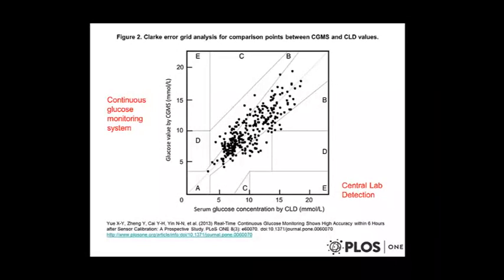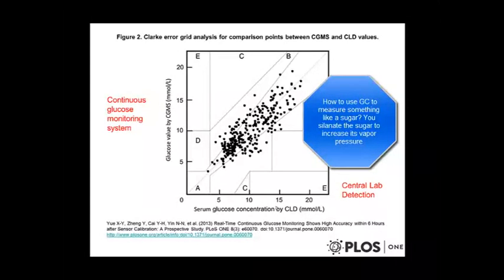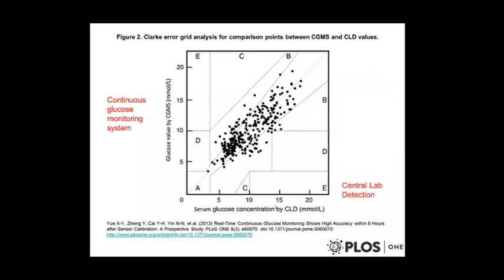What you see here is a study—this is PLOS-1 so you can read about it—where they looked at serum glucose concentrations measured by central lab detection, a very routine and rigorous methodology, perhaps GC. They measured glucose very accurately and precisely, but only one time. Up here, you see glucose value by continuous glucose monitoring system, the sub-Q implants using these sensors. If they were perfect, there'd be a perfectly straight line. For low concentrations they do pretty well.